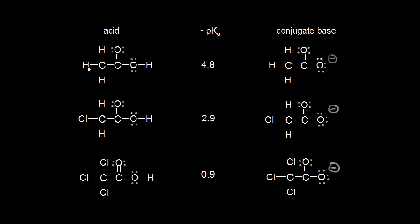Induction is another way to stabilize a conjugate base. Starting with acetic acid, the acidic proton has a pKa value of approximately 4.8. When acetic acid donates that proton, the electrons in red are left behind on the oxygen, giving the oxygen a negative one formal charge — that is the conjugate base of acetic acid.